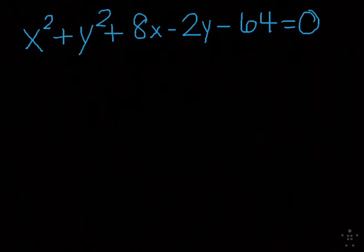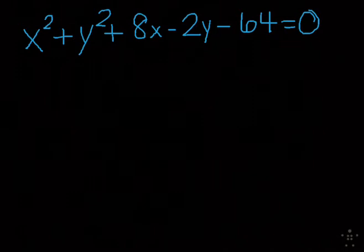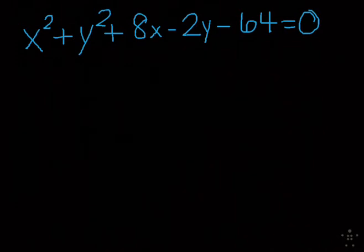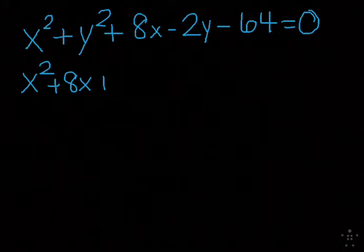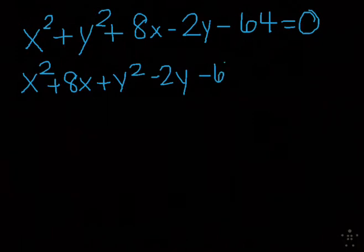The first thing I always suggest you do when you're doing these is to get all the like variables together. What I mean is all the x type terms and all the y type terms together. So we're going to have x² and I'm just going to move the 8x beside the x². Then plus the y² - 2y minus 64. That's always step one. Step two, now we're going to start converting.